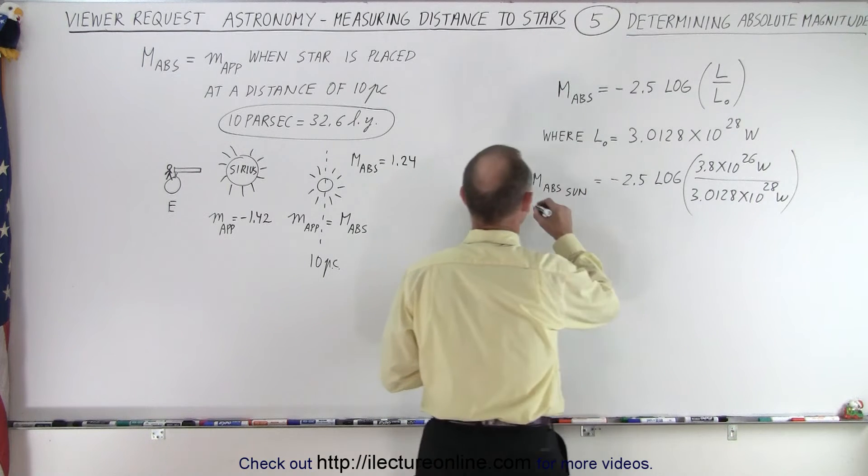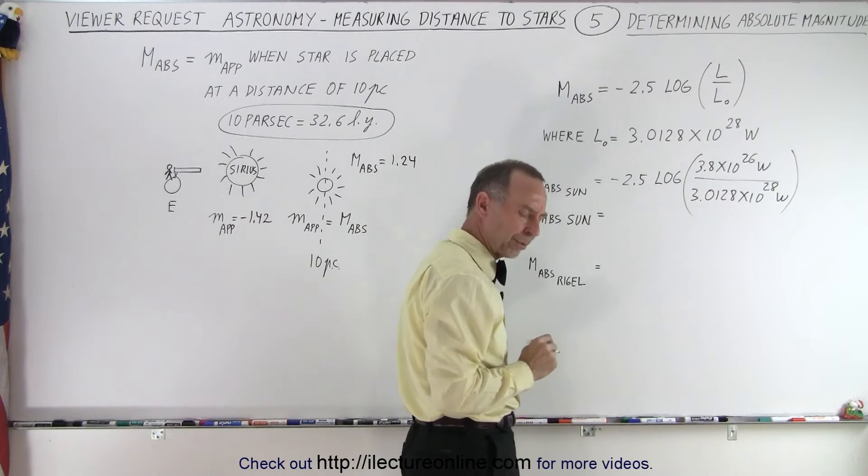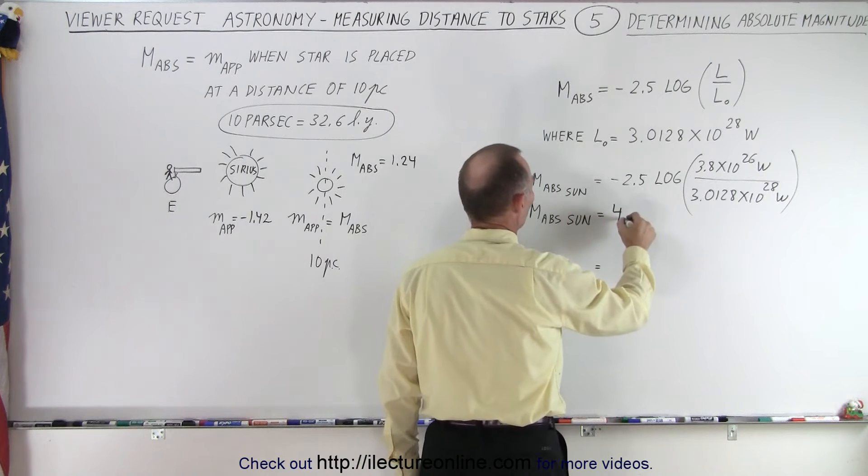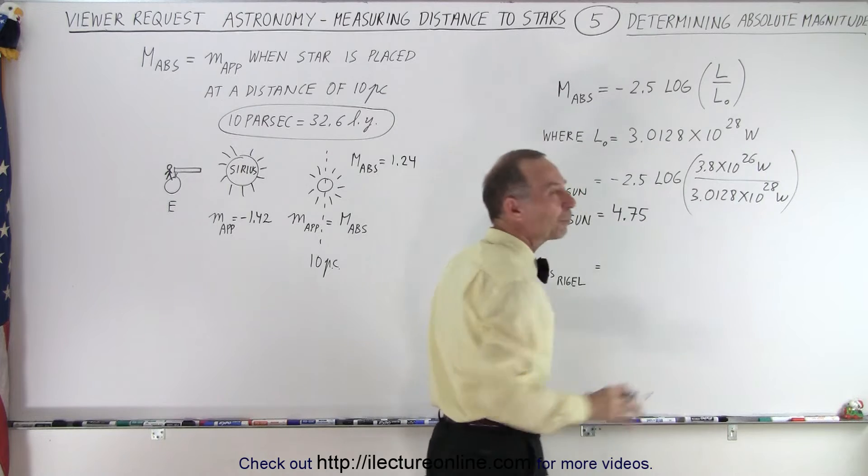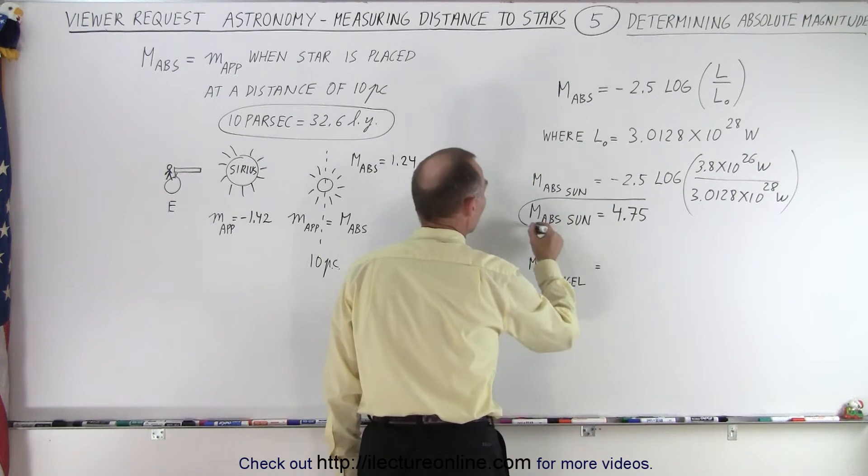We take the log of that and multiply that times 2.5 negative. And we get 4.75. So the absolute magnitude for the sun is equal to 4.75. We know it's around 4.8, but that's a pretty good calculation based upon the equation.